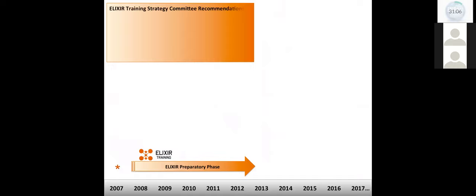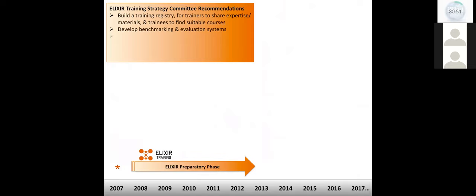So our recommendations in that report could be distilled into the following. To build a training registry for trainers to share expertise and materials and for trainees to find suitable courses. To develop benchmarking and evaluation systems. To facilitate development of new programs and integration with existing initiatives. And to provide a forum for interaction with other European training infrastructures.